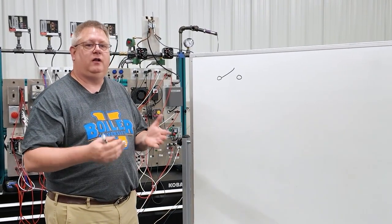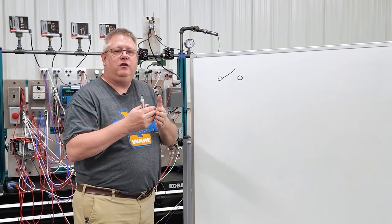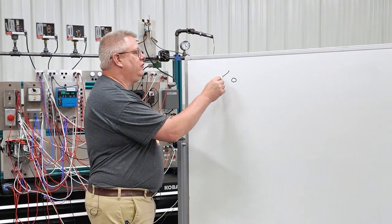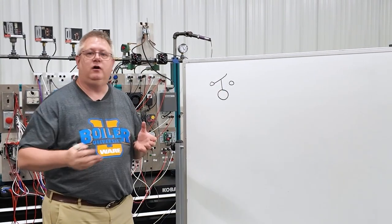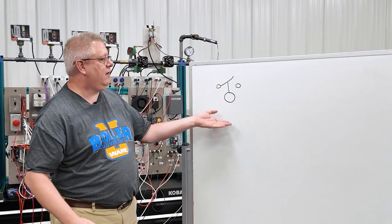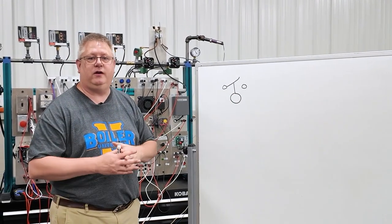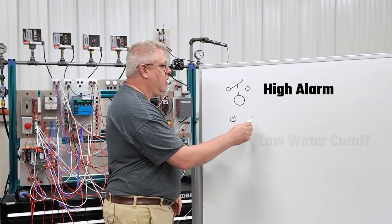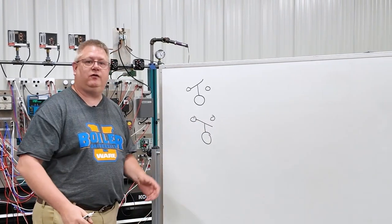If we've got a switch like our first low water cutoff switch, generally those are floats. And we can illustrate that on a diagram by having a round float shape. So if you think about a float ball, when the water level comes up, it breaks or makes the switch depending on whether it's a high alarm like I've drawn here or a low water cutoff with the float rising to make the switch.